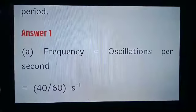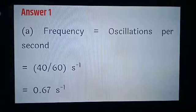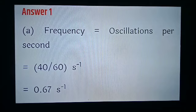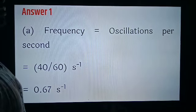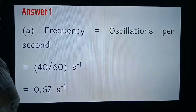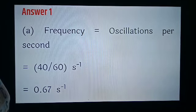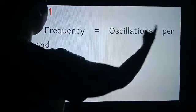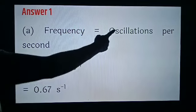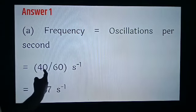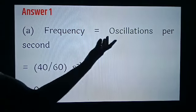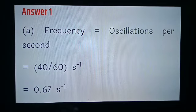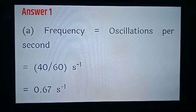Let's see the solution. First we will find the frequency. The number of oscillations taken in 1 second is called frequency, so frequency equals oscillations per second. Number of oscillations is 40 divided by time 60 seconds, that is equal to 0.67 per second, or hertz.